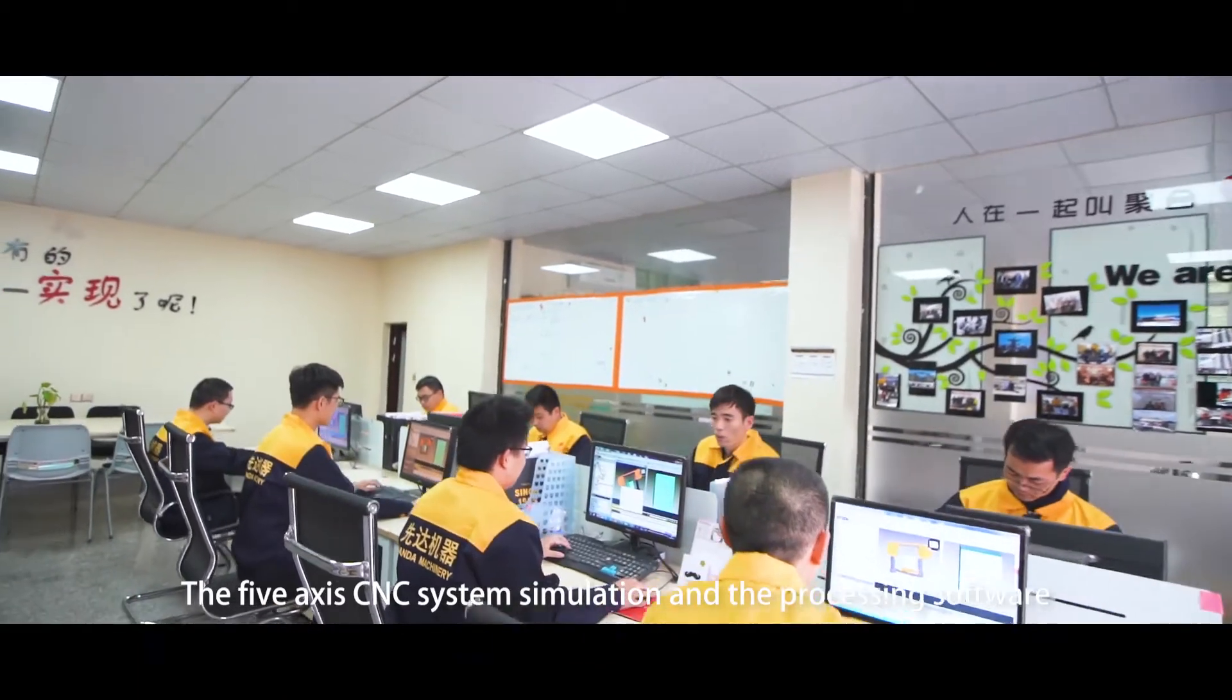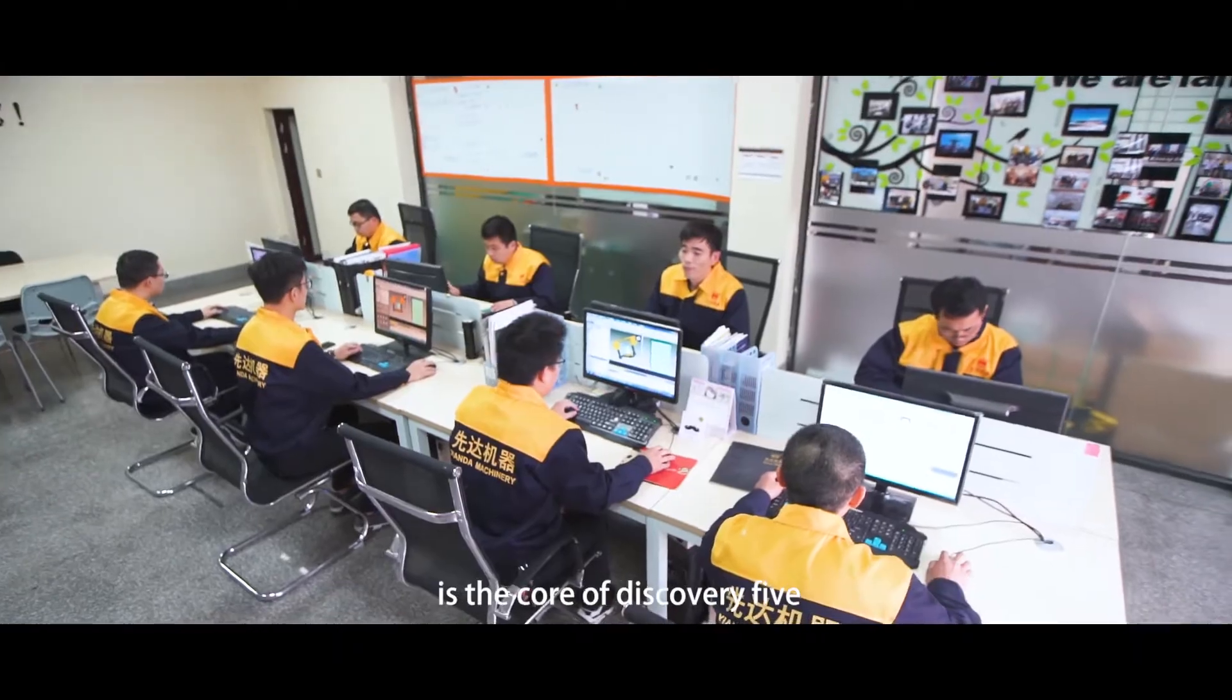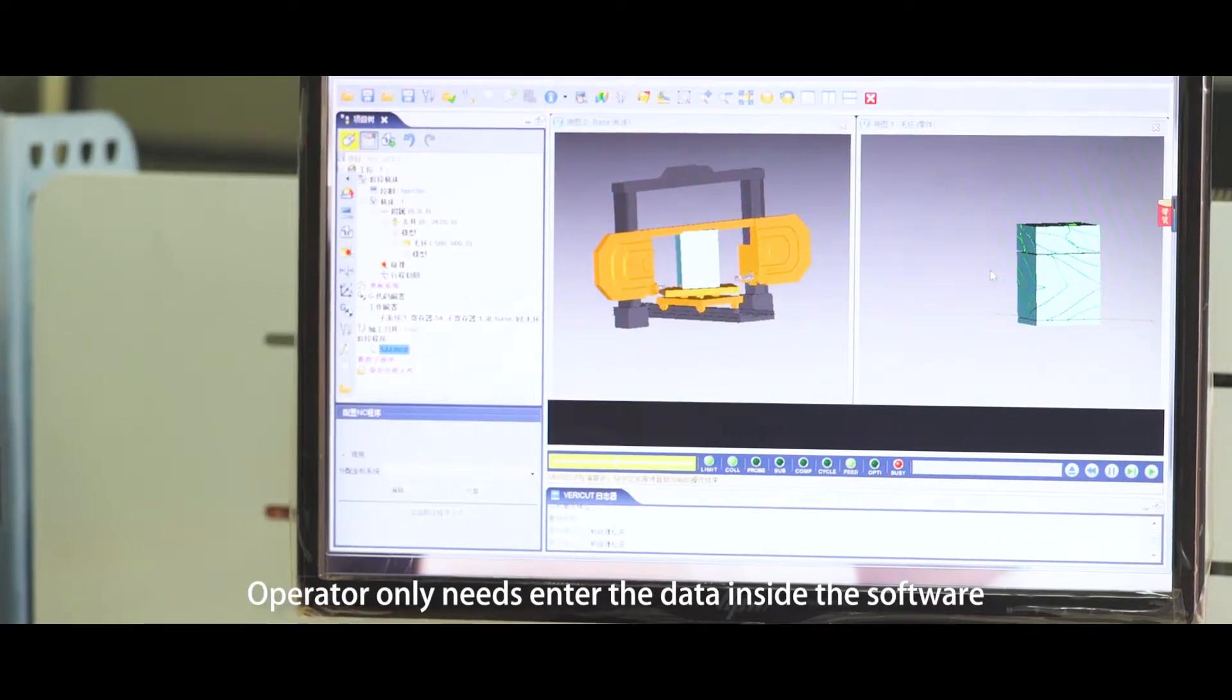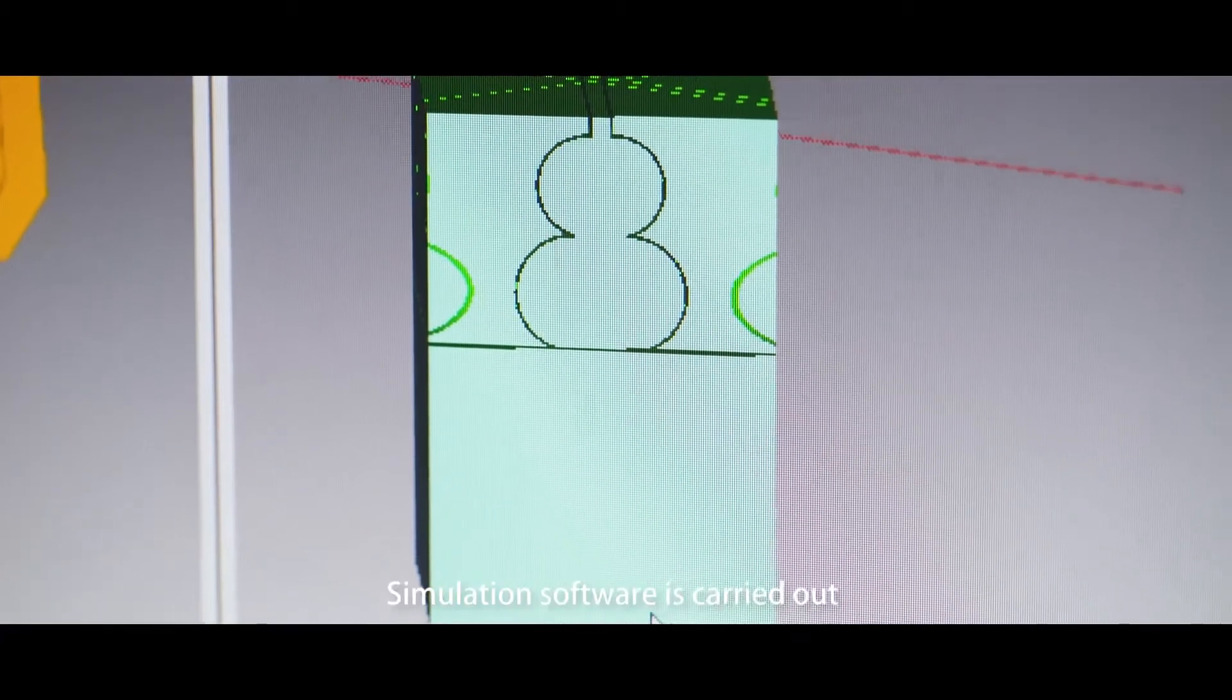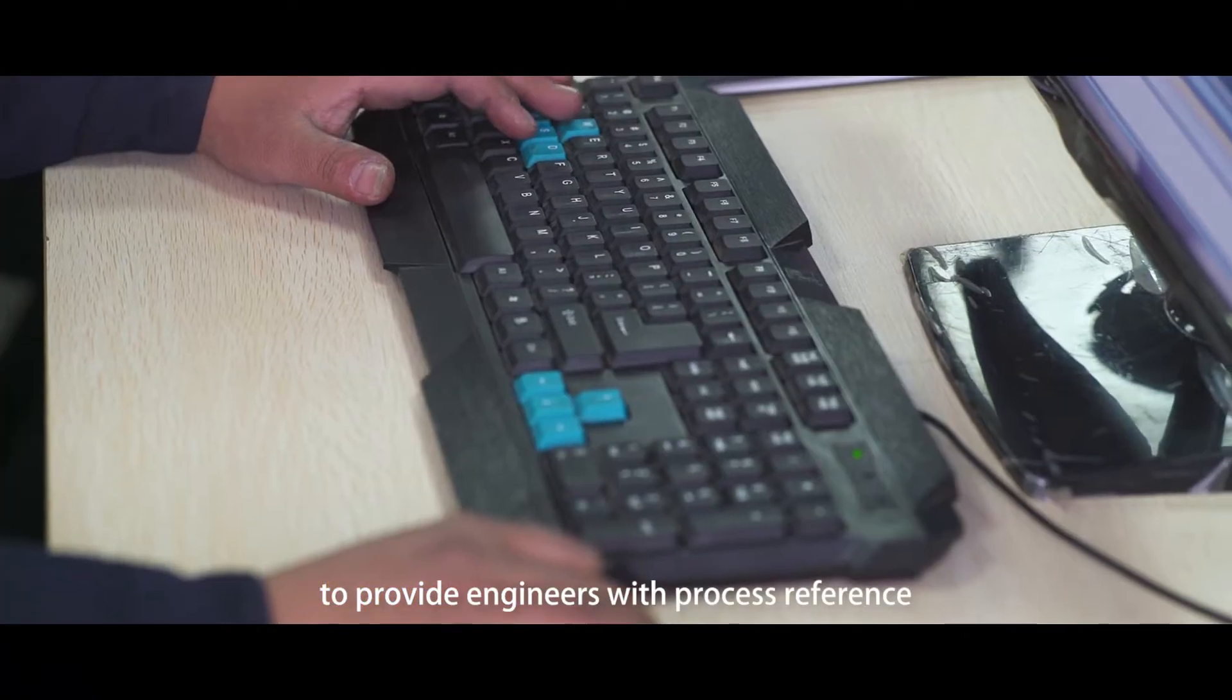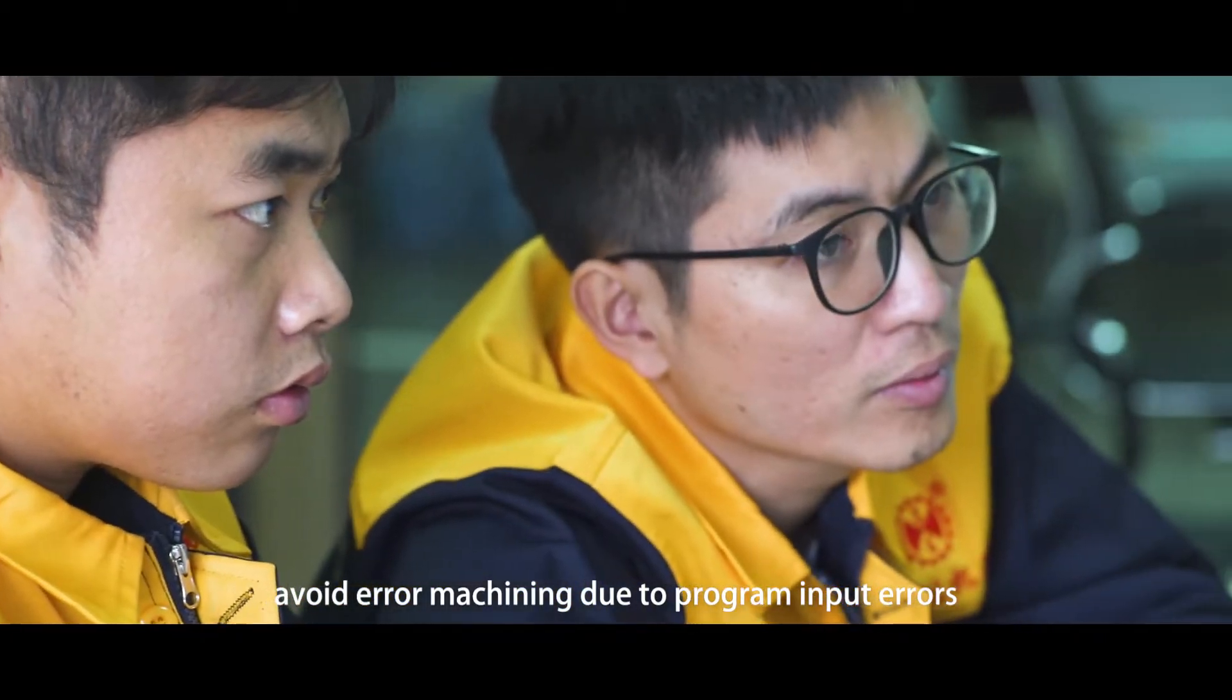The 5-axis CNC system simulation and processing software is the core of Discovery 5. Operators only need to enter the data inside the software, which will intelligently view the program. Simulation software is carried out to provide engineers with process reference and avoid error machining due to program input errors.